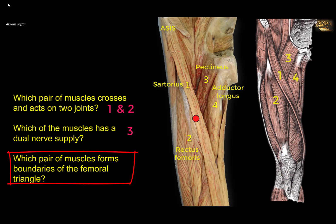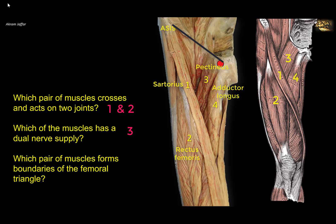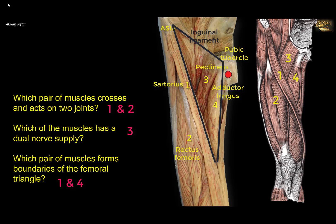Which pair of muscles forms the boundaries of the femoral triangle? The femoral triangle is an inverted triangle. Its base is located between the anterior superior iliac spine and the pubic tubercle, formed by the inguinal ligament. The lateral muscular boundary is formed by the sartorius muscle, and the medial boundary by the medial border of the adductor longus muscle — so adductor longus is in the floor of the triangle. The muscles in the floor, from medial to lateral, are adductor longus, pectineus, and then psoas major and iliacus.